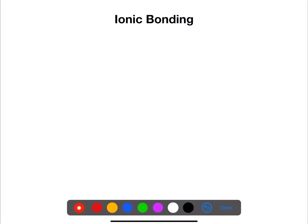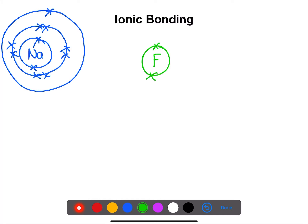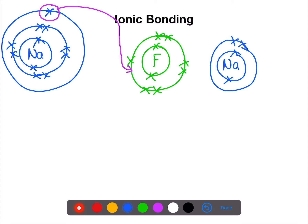During ionic bonding, electrons are transferred. They are transferred from the metal atom to the non-metal atom. We can show this using sodium and fluorine again. The electron in the outer shell of the sodium atom can be transferred to the outer shell of the fluorine atom. This then gives us a sodium ion with a positive charge and a fluorine ion with a negative charge.